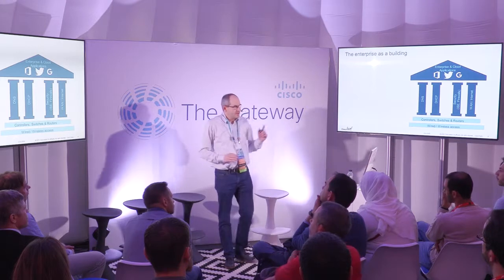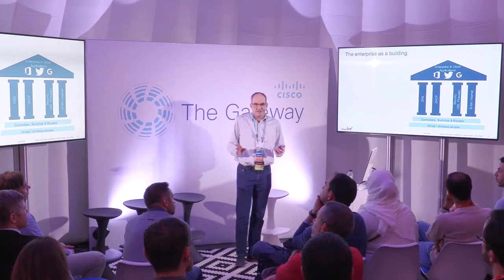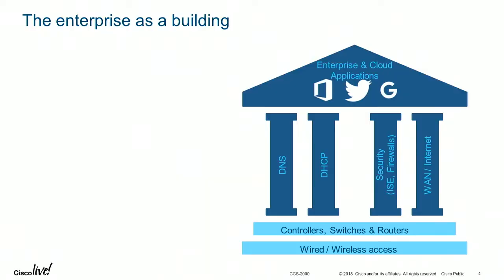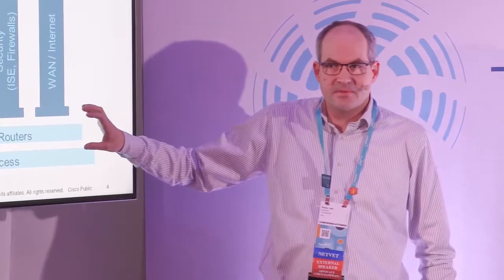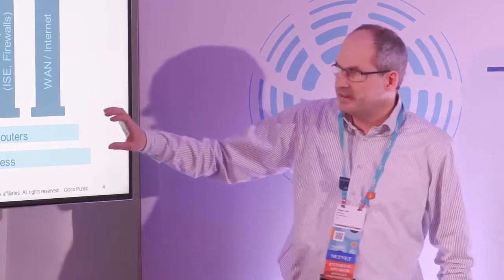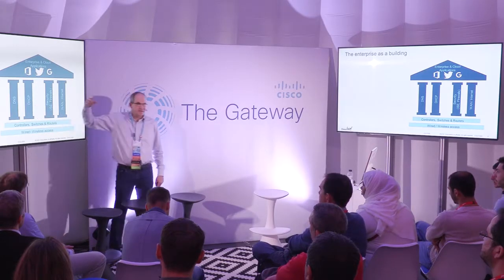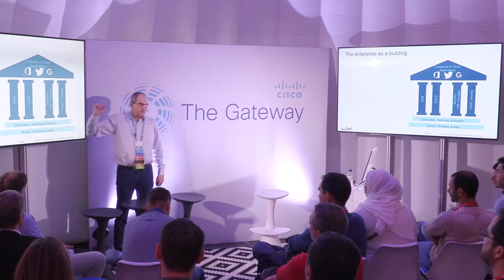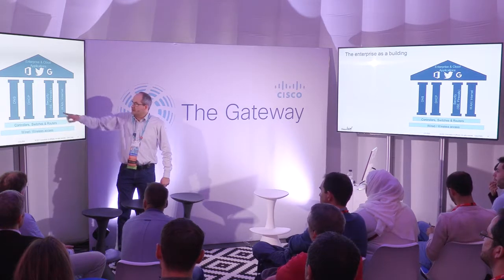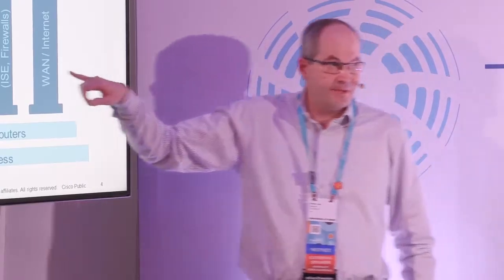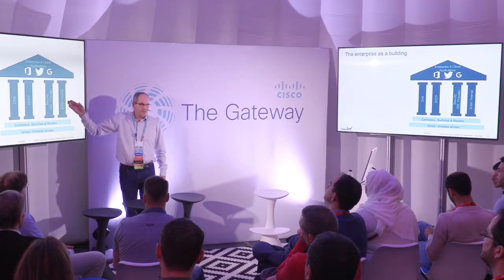I use the example of a building to explain how the network works. At the bottom of an enterprise you have your wired and wireless connection — cable or wireless to the access point, all connected to switches, controllers, and routers — that's your local area network. You need services like DNS to translate your domain name to an IP address, DHCP for providing the right IP address for a specific endpoint, security, firewall, and of course the WAN or internet to connect to your enterprise application — on premise, data center, cloud, or a mix.